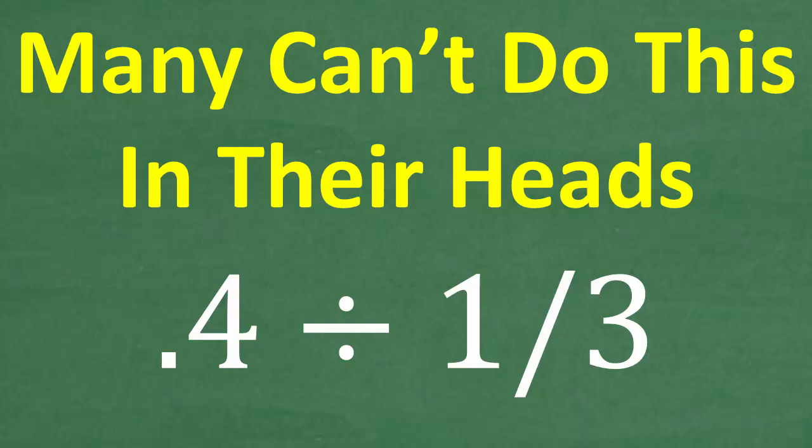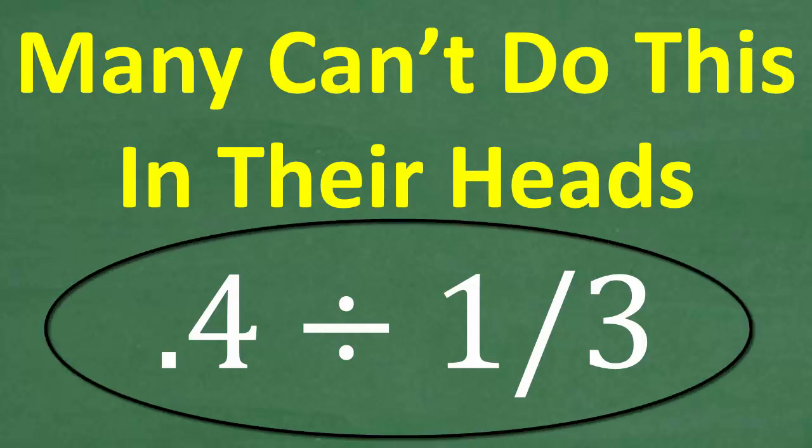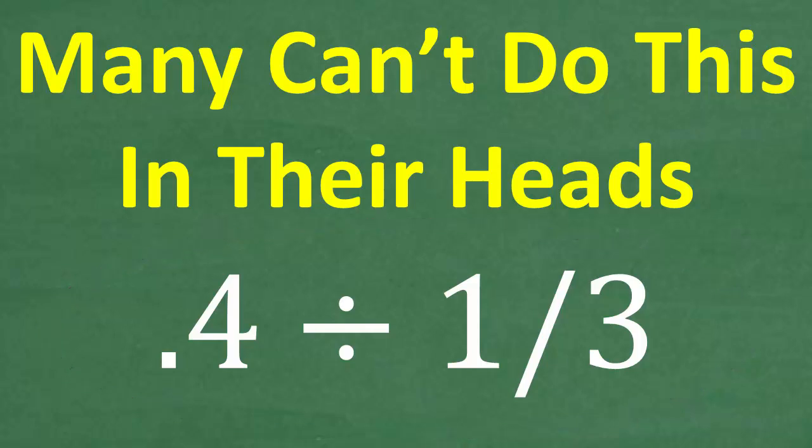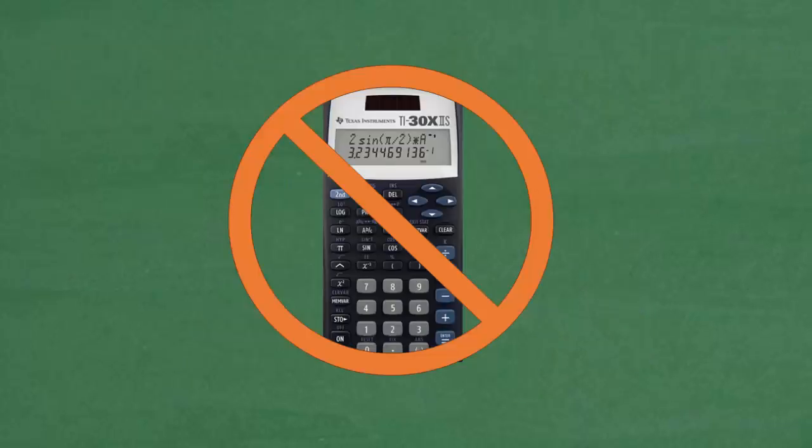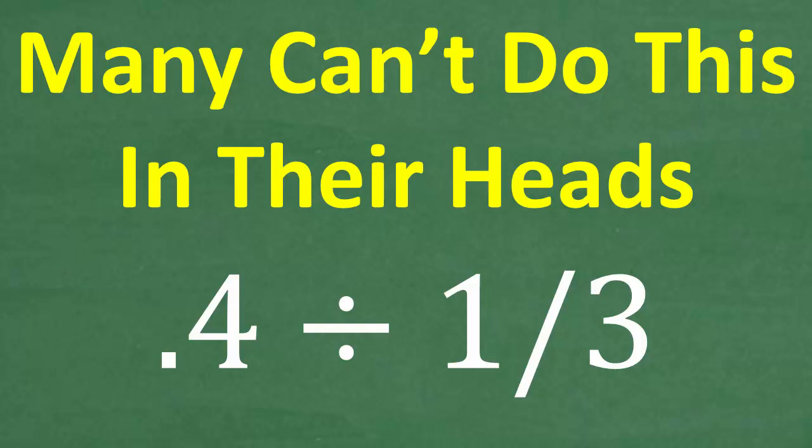The problem is 0.4 divided by one third. Take your time with the problem. There's no rush, no time limit here. The only rules: no calculator, no pen, no paper. You're not writing this down. You're doing this all inside of your head. If you have your answer, go ahead and put that into the comment section.